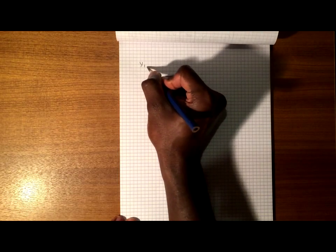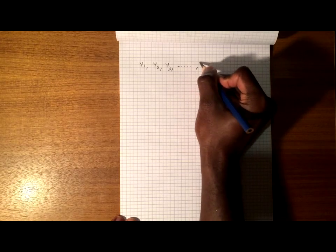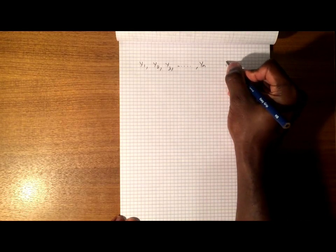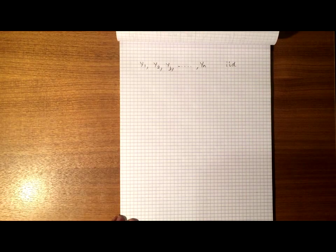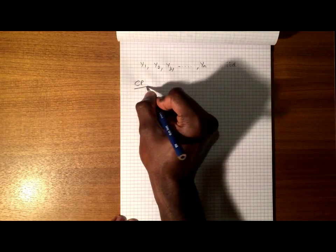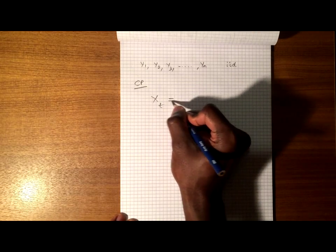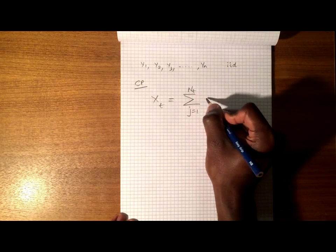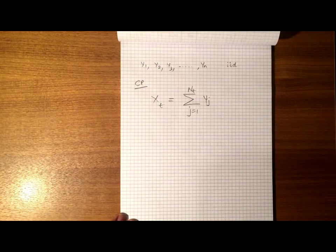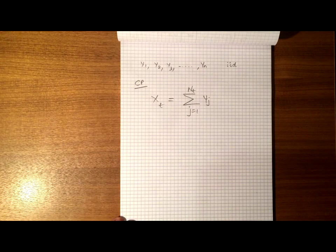So if we have a sequence of random variables y1, y2, y3, all the way up to yn, and these random variables are independent and identically distributed random variables, then a compound Poisson process, xt, is the summation from j equals 1 to nt of yj, where yj are the independent and identically distributed random variables.